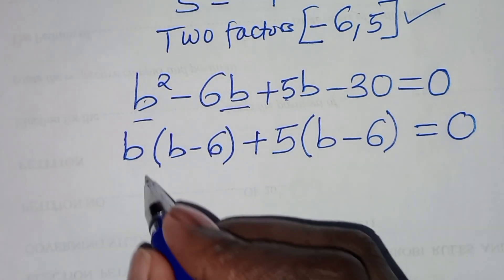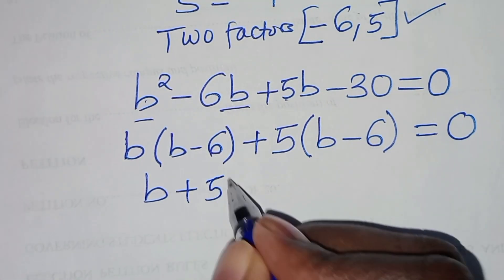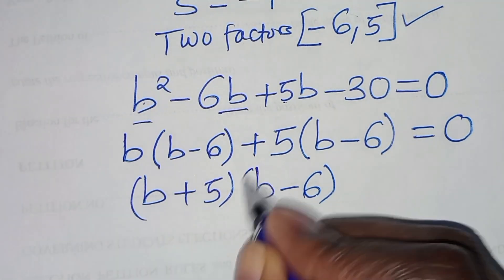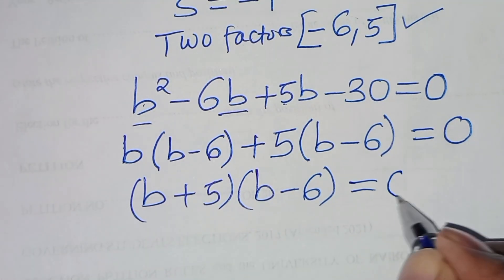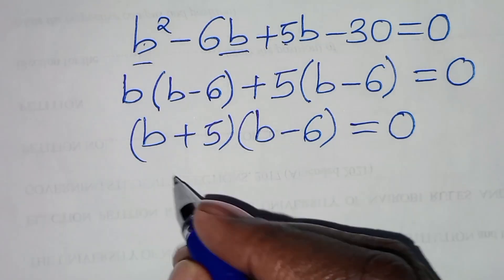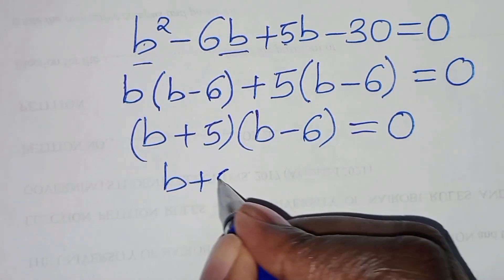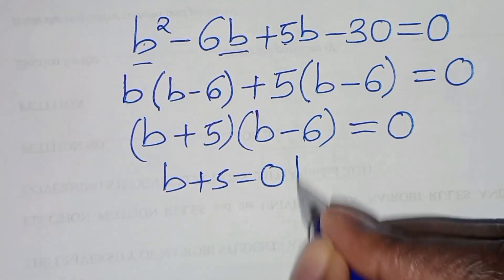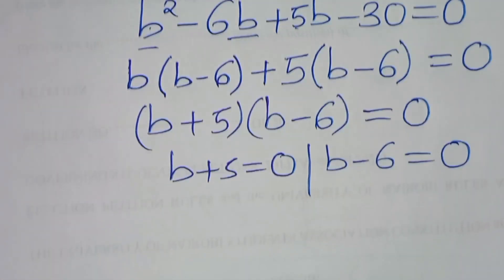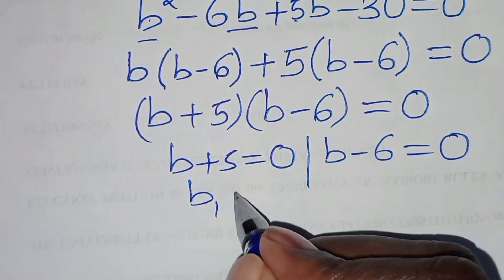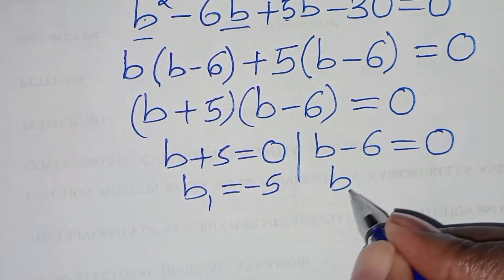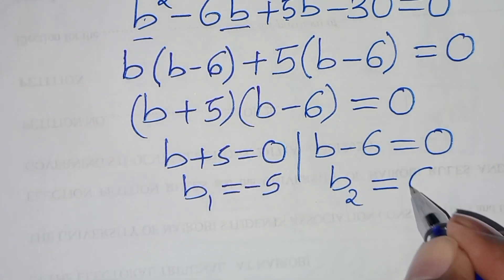So we have (b + 5)(b minus 6) = 0. This gives us two cases: b + 5 = 0 giving b1 = minus 5, and b minus 6 = 0 giving b2 = 6.